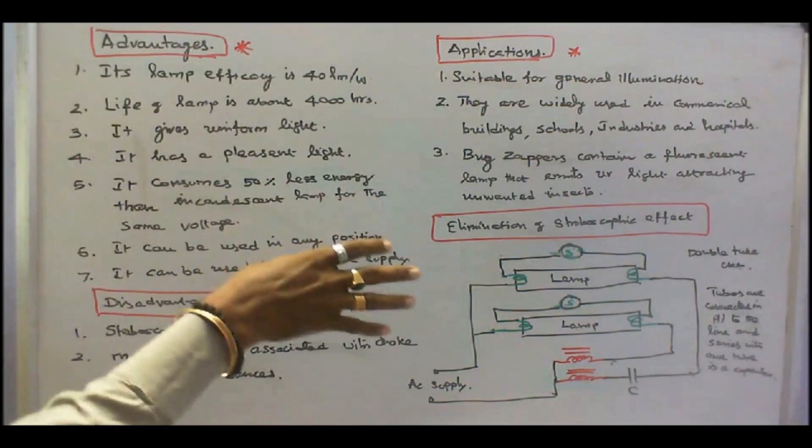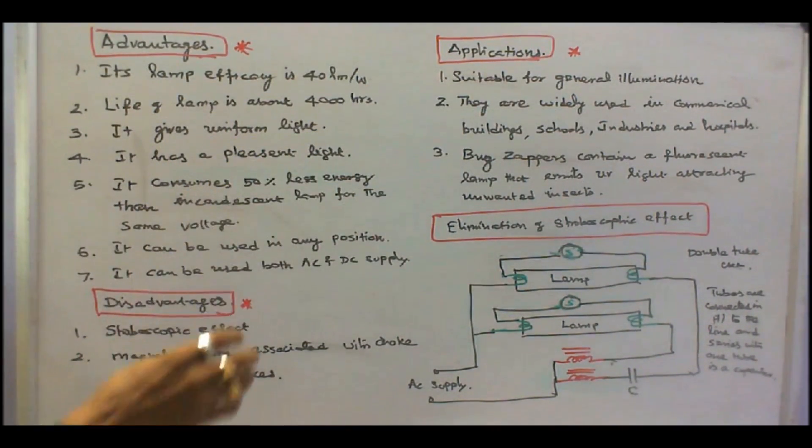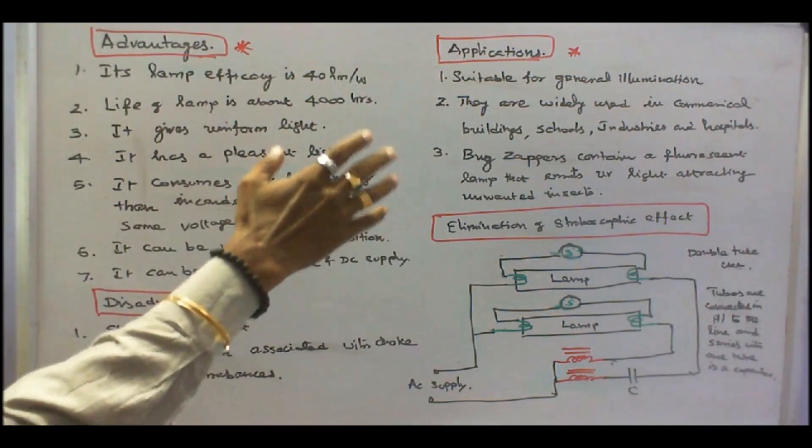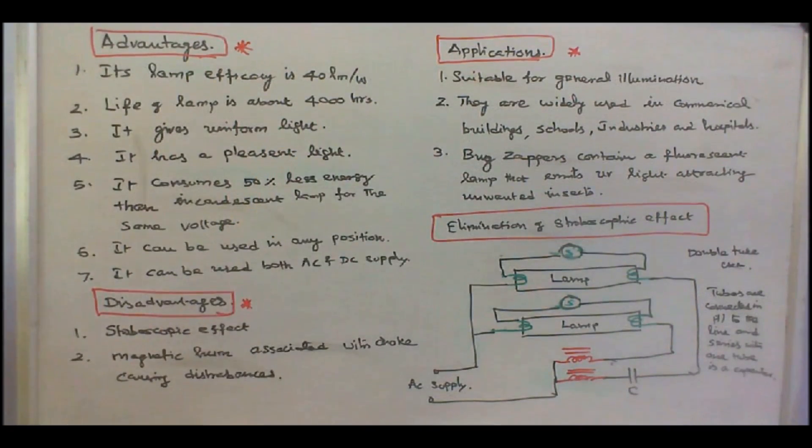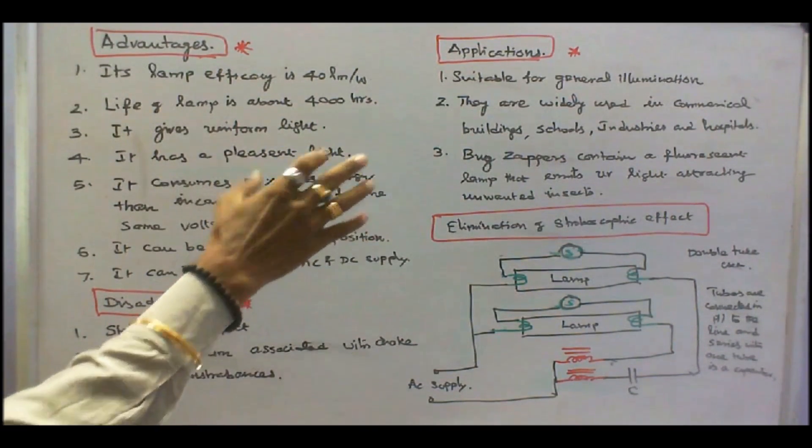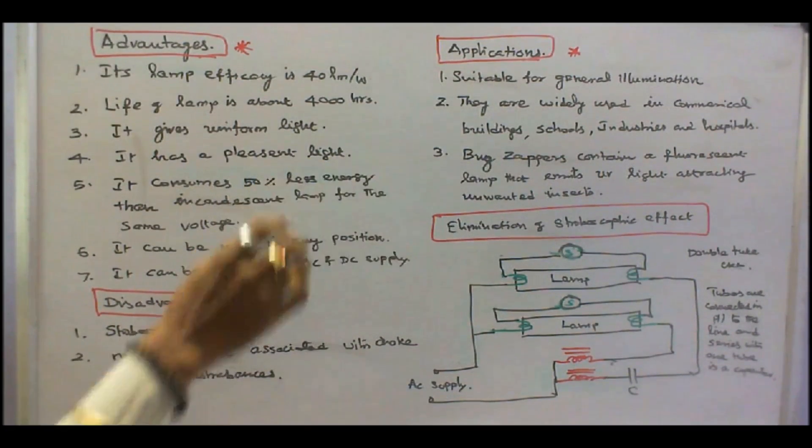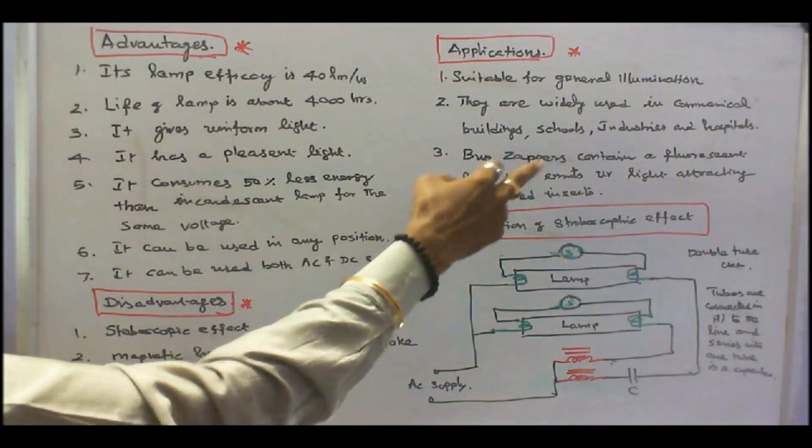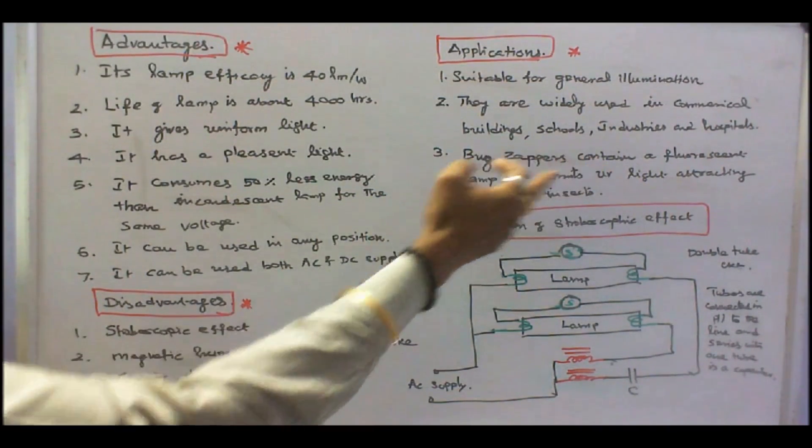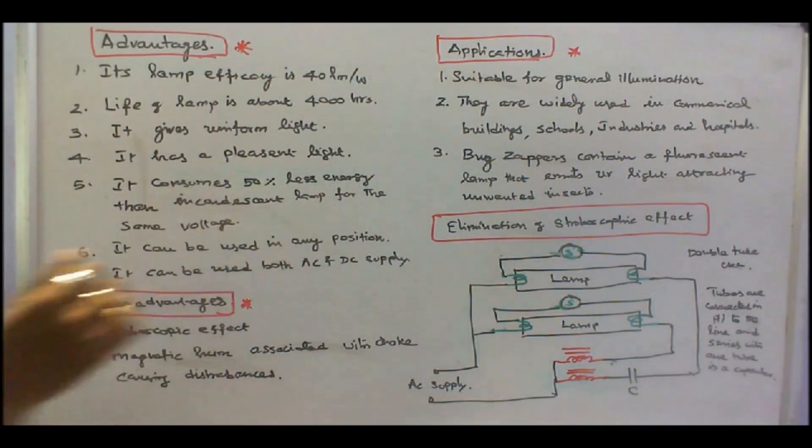The applications are highly suitable for gentle illumination. Number 2, they are widely used in commercial buildings, schools, industries and hospitals. It's a popular light. Number 3, bug zappers. Bug zapper is an electrical device which is used to kill the insects. Contain a fluorescent lamp that emits ultraviolet light attracting unwanted insects. That is the application of fluorescent tube light.